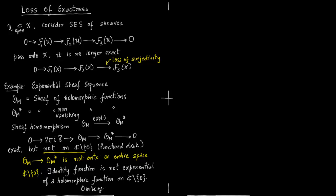Zero is missing, so you can't take the exponential of zero and get the identity map. There is an important thing to recall here: notice that you can go from 0 → F1(U) → F2(U) → F3(U) — this short exact sequence on small open sets passes on perfectly to stalks. There is no loss of exactness if you go from these open sets to stalks.